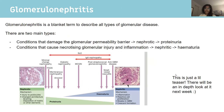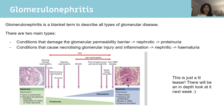Glomerulonephritis is a blanket term covering two types. Nephrotic syndrome is when the permeability barrier is affected — remember nephrotic is associated with proteinuria (protein in the urine). Nephritic syndrome involves injury and inflammation, causing hematuria (blood in the urine). There's a nice diagram that covers this which you can look at later.